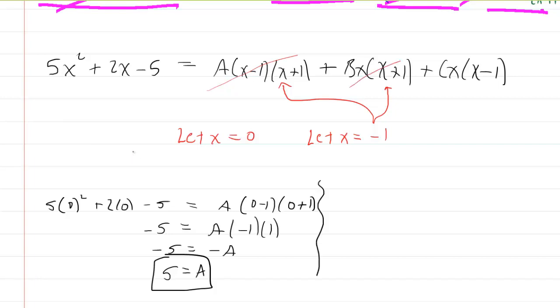So now we're going to go through and put in negative 1. We'll have 5 times negative 1 squared plus 2 times negative 1 minus 5 equals, over here, you're going to have C times negative 1 times negative 1 minus 1. If we clean this up, we're going to have 5 minus 2 minus 5 equals negative C times negative 2. We end up here with negative 2 equals, now be careful here, this will become positive 2. Therefore, C will equal negative 1.